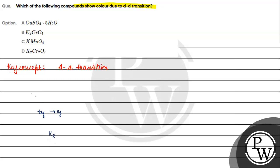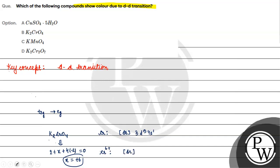If we talk about K₂CrO₄, what will be the chromium oxidation state? We get: 2 + X + 4×(−2) = 0, so the chromium oxidation state is +6. The electronic configuration at Cr⁶⁺ is [Ar] 3d⁰ — all d electrons are gone. Since we have no d electrons, d-d transition will not be possible.